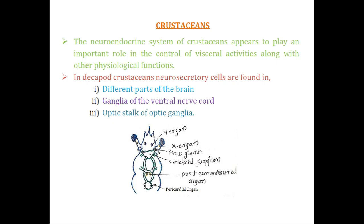The major neuroendocrine organs are: the sinus gland at the base of the optic stalk, the Y-organ in the head region, the X-organ scattered in the optic stalk near the eye, the cerebral ganglion, the post-commissural organ — commissure being the nerves connecting different ganglia — and finally the pericardial organ, which consists of small patches of neuroendocrine structures associated with the nerves surrounding the heart.